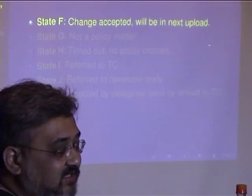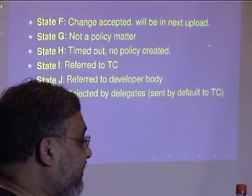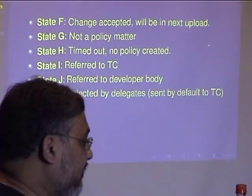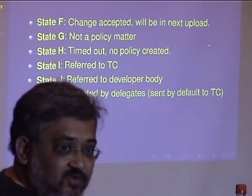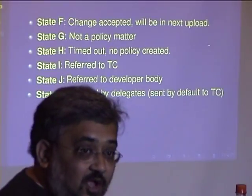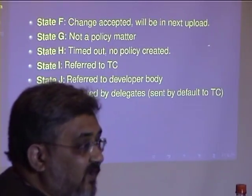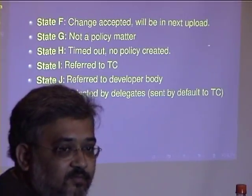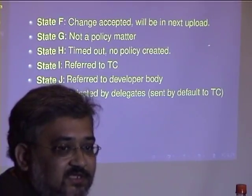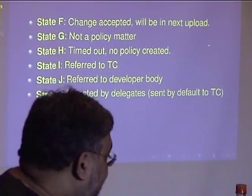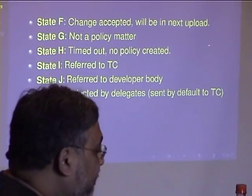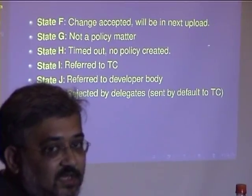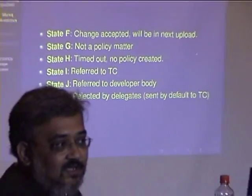The result states are: the change is accepted; we decide it is not a policy matter; it timed out because we couldn't reach a conclusion; we couldn't find a solution at all; or we refer it to the technical committee as being too hard for the poor policy folk. We also refer it to the developer body. Or we just reject it — and if the delegates reject it, it probably goes to the technical committee only if the people who proposed it decide they want to appeal. I don't want to give the policy delegate the power of rejecting things out of hand without any review.